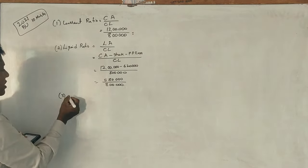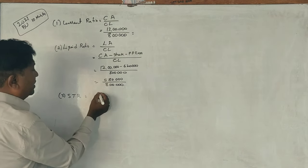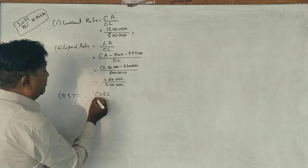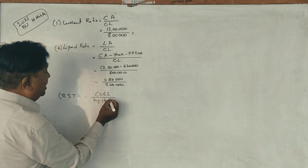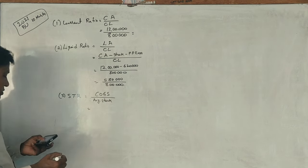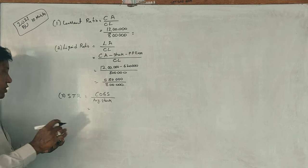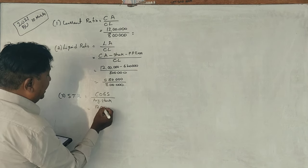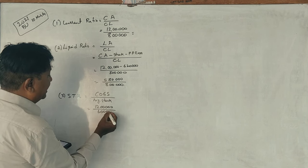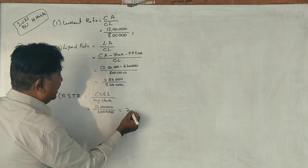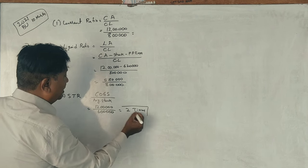Stock turnover ratio. The formula is cost of goods sold divided by average stock. Here, the closing stock is used. Cost of goods sold is 12 lakhs, and closing stock is 6 lakhs. So stock turnover ratio is 2 times.